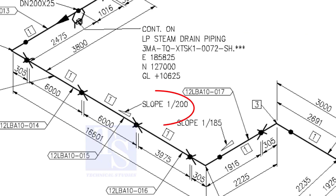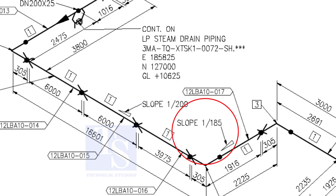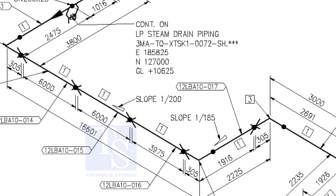See, the slope here is 1 is to 200. The previous slope was 1 is to 74. See the slope here. When you prepare to fabricate a pipe spool, go through each and every detail before starting the job — otherwise mistakes may happen.